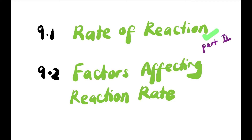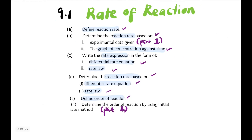At the end of this lesson, you should be able to determine the reaction rate based on experimental data given, and also determine the order of reaction by using the initial rate method or from experimental data.